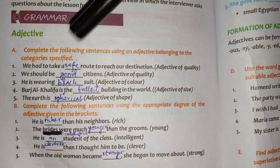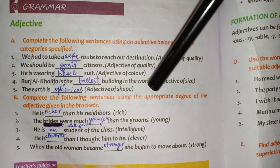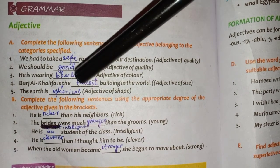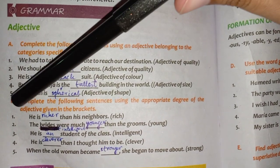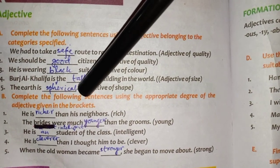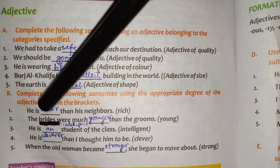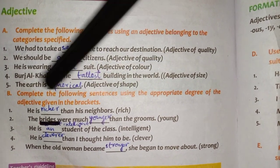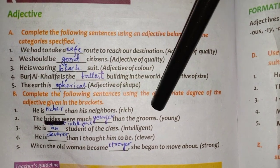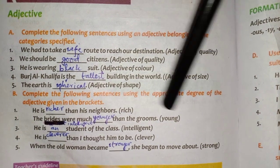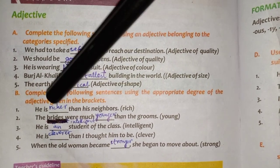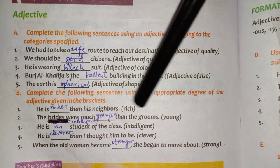Then Part B: complete the following sentences using the appropriate degree of the adjective given in the brackets. See the first part. Part two: the brides were much dash than the grooms — again a comparison. So we will use comparative degree over here: younger. The brides were much younger than the grooms.